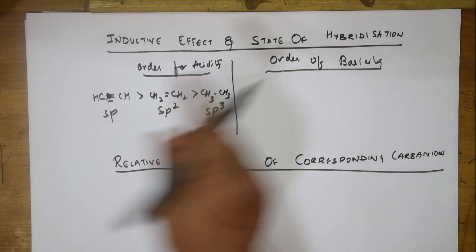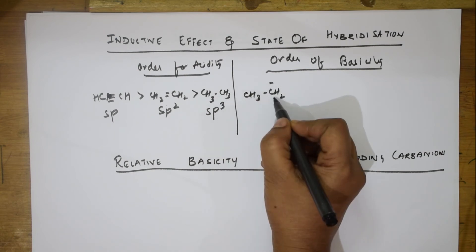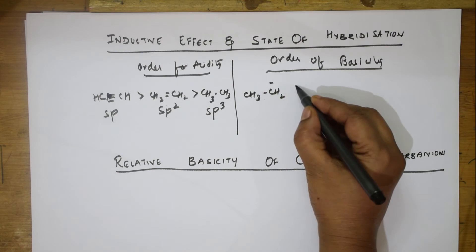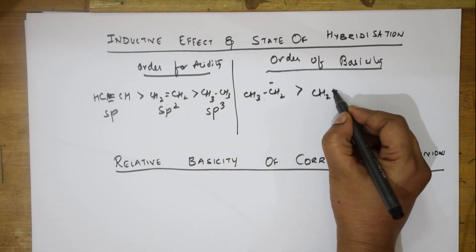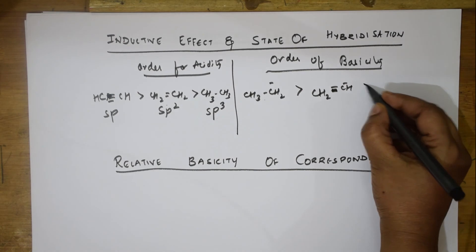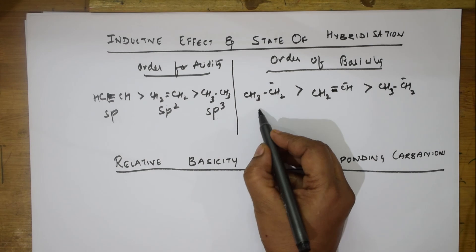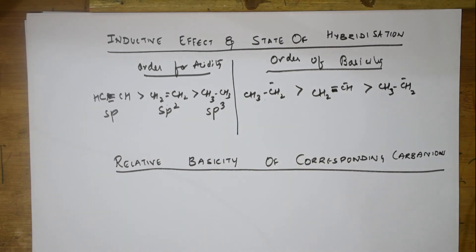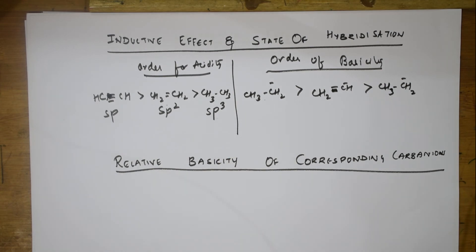For basicity with the corresponding carbanions, the order is reversed: the carbanion of sp3 hybridized carbon > carbanion of sp2 hybridized carbon > carbanion of sp hybridized carbon. Whenever they ask for acidity or basicity order based on hybridization, this is the concept to remember.